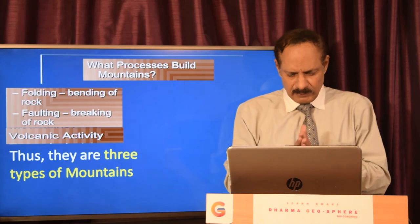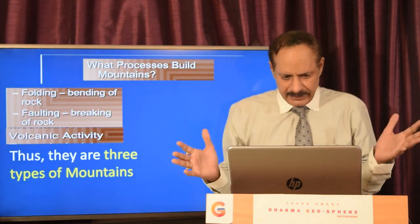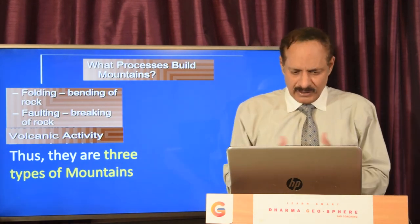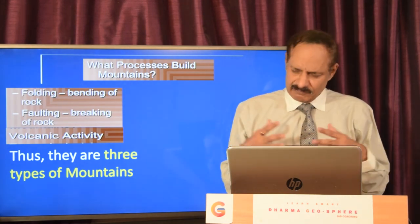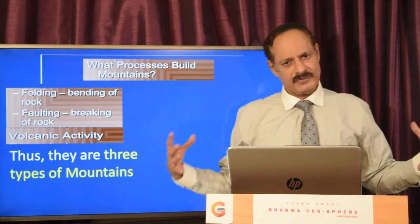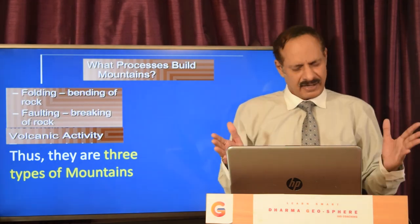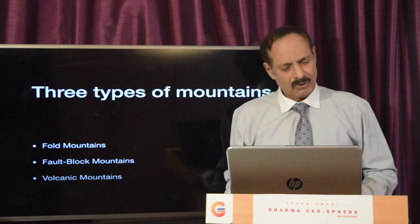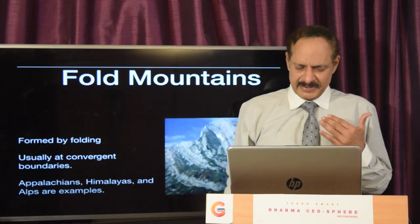The mountain building process is broadly divided into three types: folding, which involves bending of rocks happening at continent-continent convergent boundaries; faulting, which is the breaking away of rocks at divergent boundaries; and volcanic activity, which happens at ocean-ocean or ocean-continent convergence. First, there are three types of mountains: fold mountains, volcanic mountains, and fault block mountains. Fold mountains usually occur at convergent boundaries; examples are the Appalachians, the Himalayas, and the Alps.